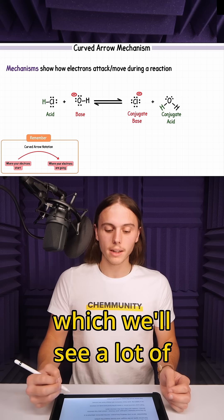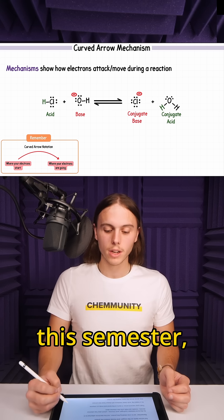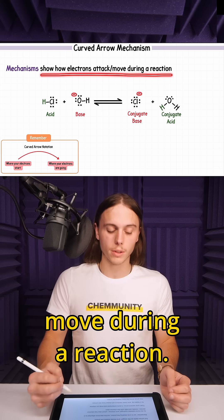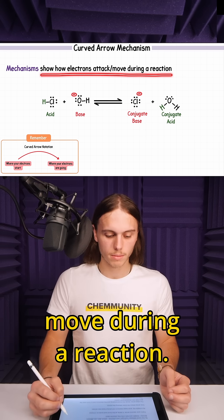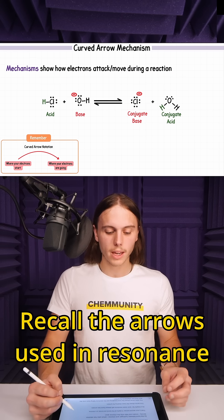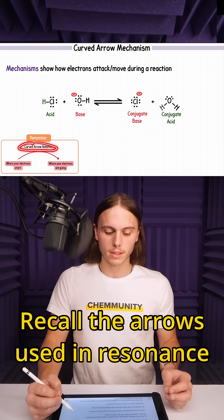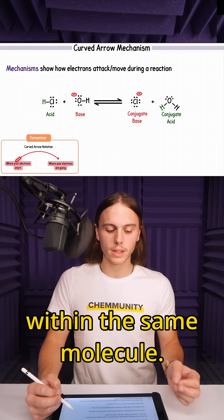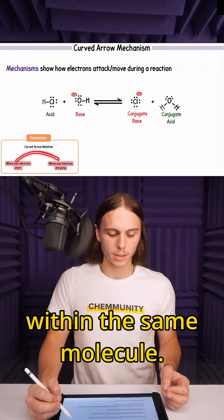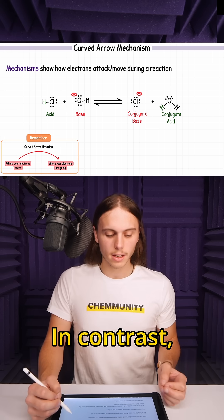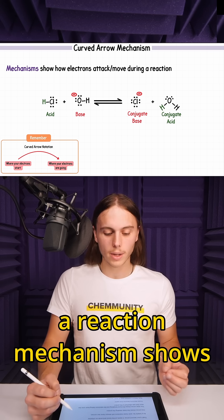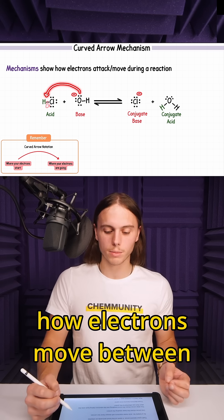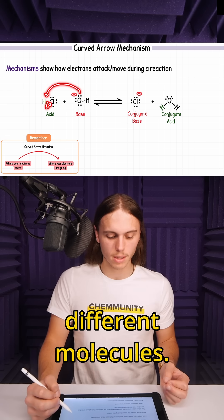Mechanisms, which we'll see a lot of this semester, show how electrons move during a reaction. Recall the arrows used in resonance showed how electrons moved within the same molecule. In contrast, a reaction mechanism shows how electrons move between different molecules.